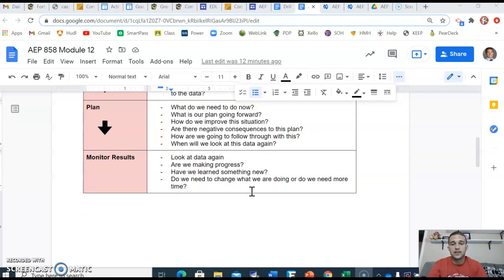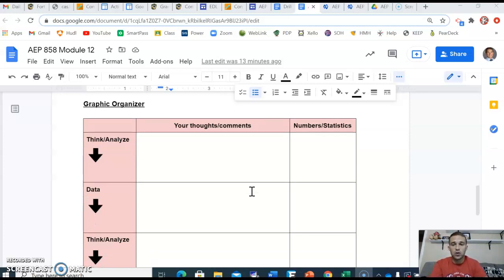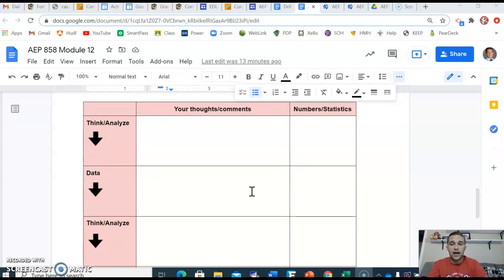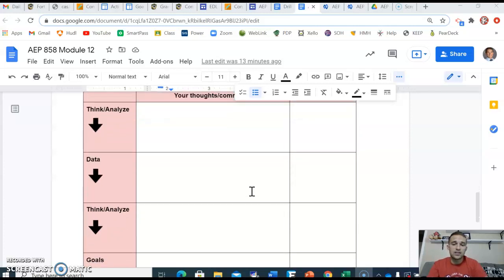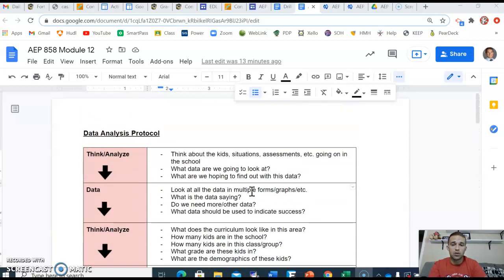And then monitor results down here. Let's look at the data again. Come back to this. This is kind of our future thoughts. Are we making progress? Have we learned something new? Do we need to change what we are doing? Or do we just need to keep going and need more time? So the arrows, I hope, help you follow this. But your thoughts, comments, write down as you look at those questions. And we're thinking and analyzing them. And I've got a column on the right. We could list some numbers or some stats. And then go down into data. So this is all coordinating right along with this data analysis protocol right here.